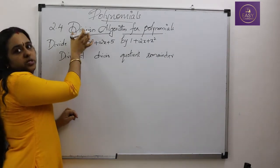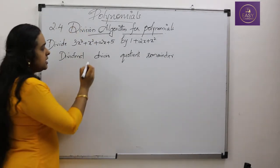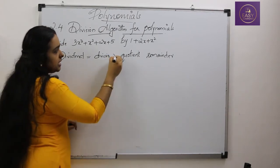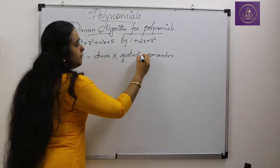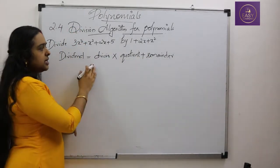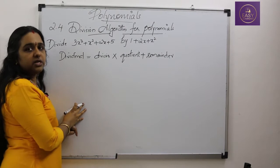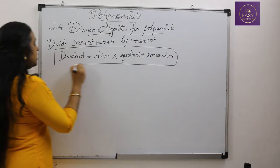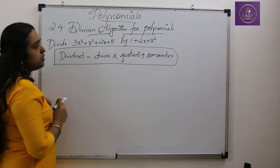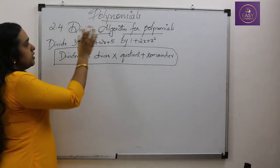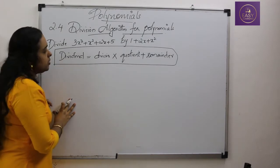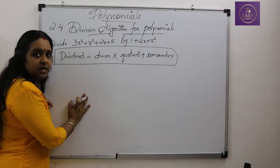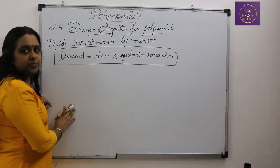We know that dividend is always equal to divisor into quotient plus remainder. This is the theorem which we are going to prove using our division algorithm for polynomials — we are going to check whether dividend equals divisor into quotient plus remainder.